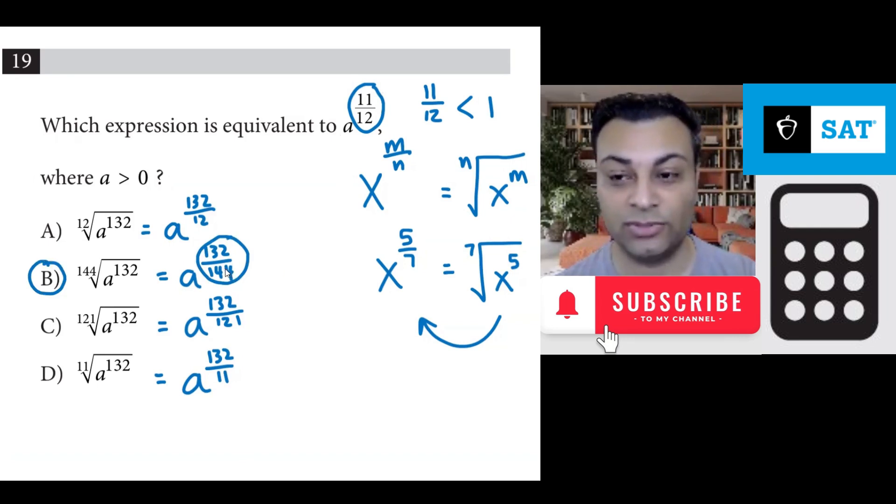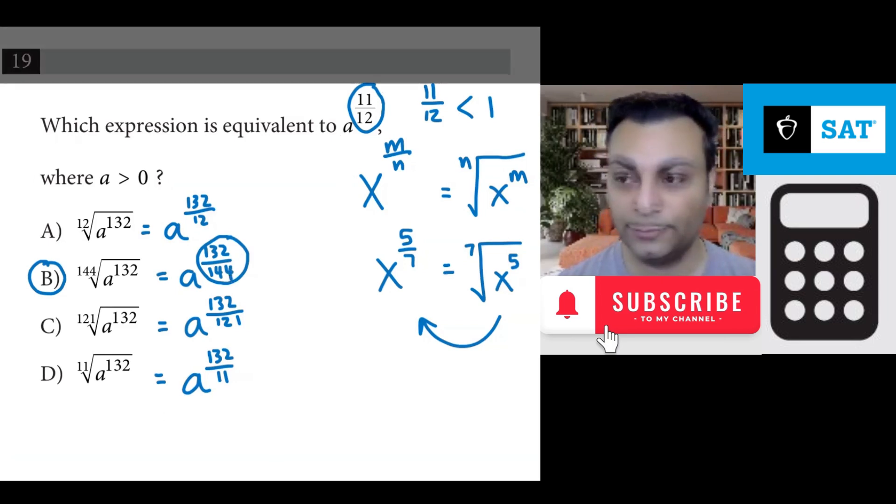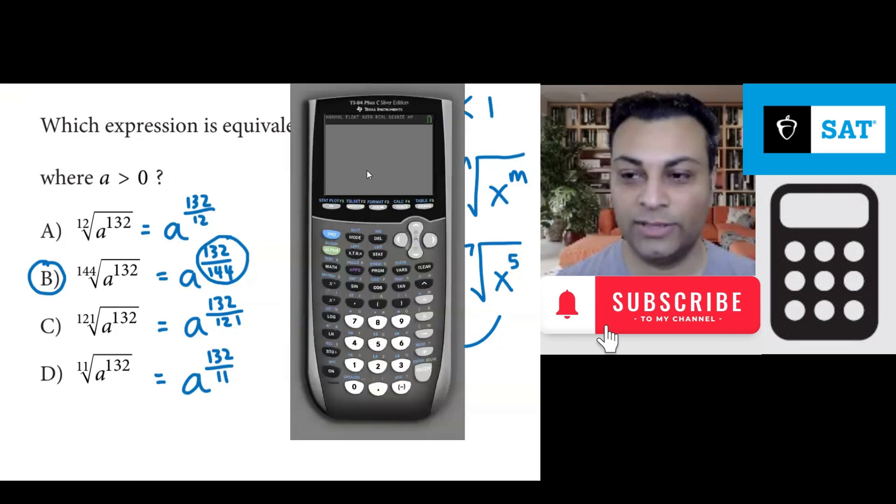However, you can use your calculator to simplify 132 over 144. Let me get the calculator out real quick. And let's go ahead and do some fraction work. And we can see 132 over 144, that's 11 over 12. And these other fractions won't be 11 over 12.